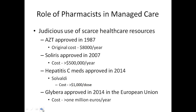There's a drug called Glybera that was approved in the European Union — it costs over one million euros per year, and it's coming to the U.S. Drug prices are basically completely out of control, and this is another area where managed care pharmacy can help use those scarce resources in the best way possible.